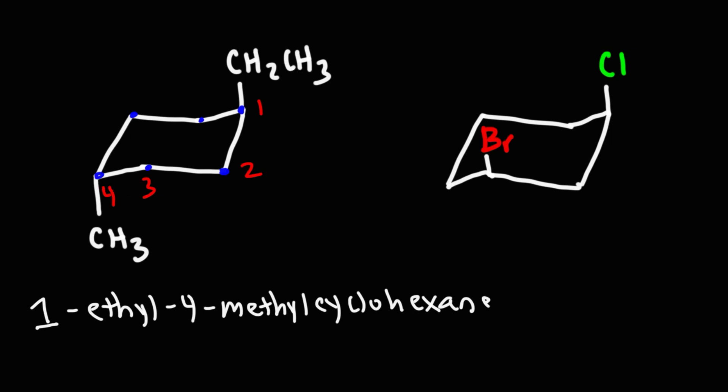Now what about the second example? Well, the parent name is still the same, cyclohexane, but now should we count it this way or should we count it in the other direction? B comes before C, so we want the 1 to be on bromo instead of chloro.